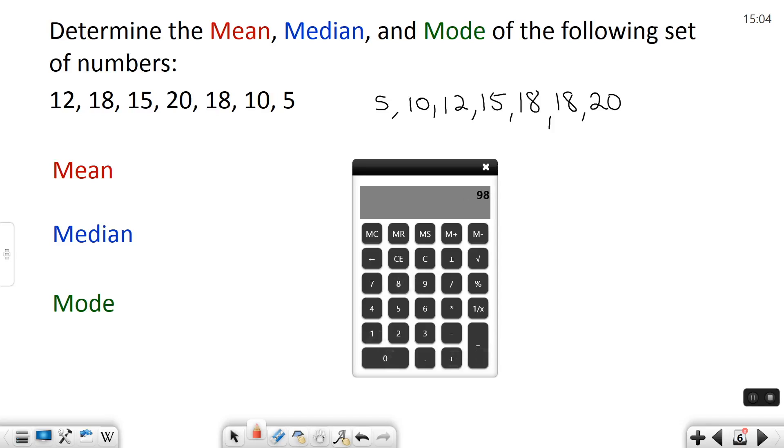When I add all these up I get 98, and I'm going to divide that by seven because that's how many numbers there are. Divide by seven I get 14. So that means the mean or average of these numbers is 14.